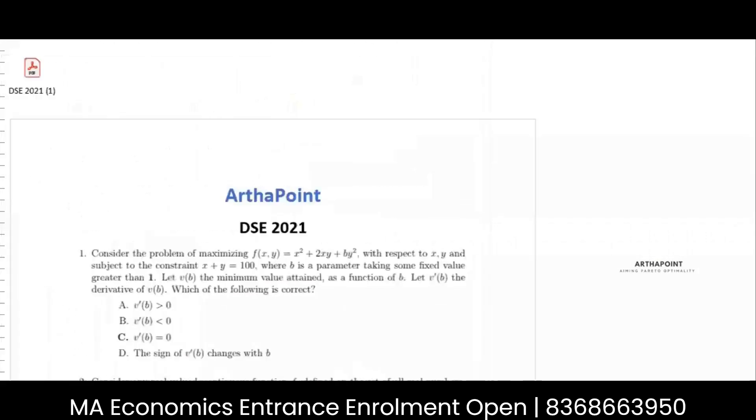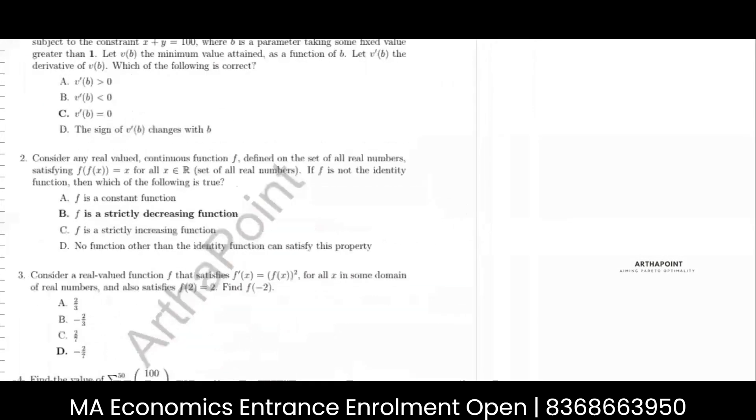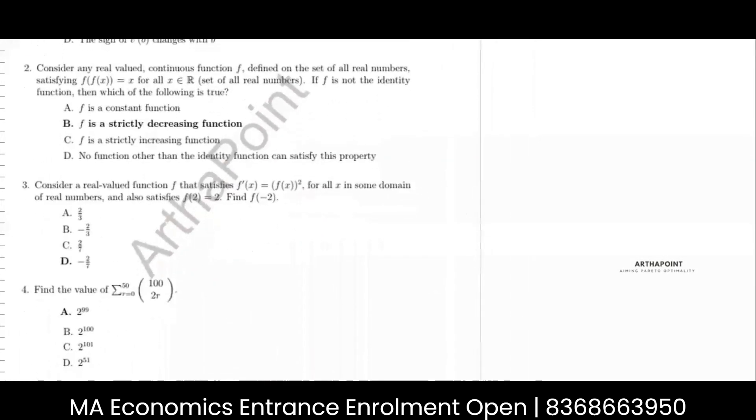Consider question number 2 of DSC 2021 paper. What is this question saying? Consider any real valued continuous function defined on the set of all real numbers such that f of f of x is equal to x. This is given for all x belonging to the real numbers. Then it says if f is not an identity function. So what is an identity function?